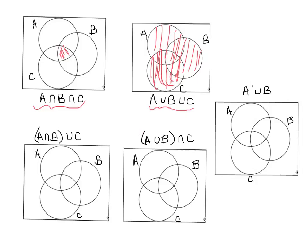Let's do the one on the bottom left: A intersect B union C. Because we have A intersect B and it's in union with C, we can first shade everything in A intersect B — that middle overlap between A and B — and since it's a union, we can then shade everything in C as well. That is A intersect B union C.